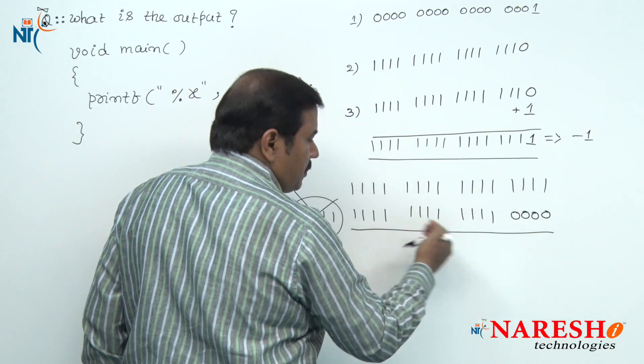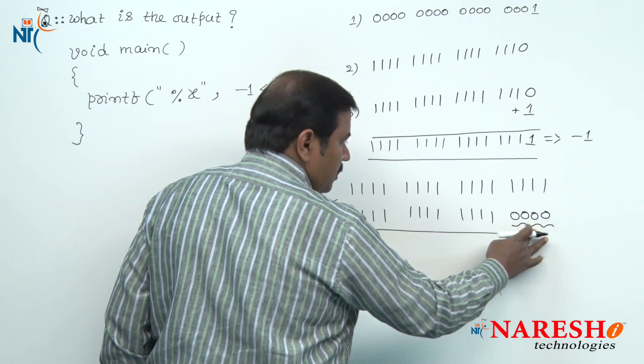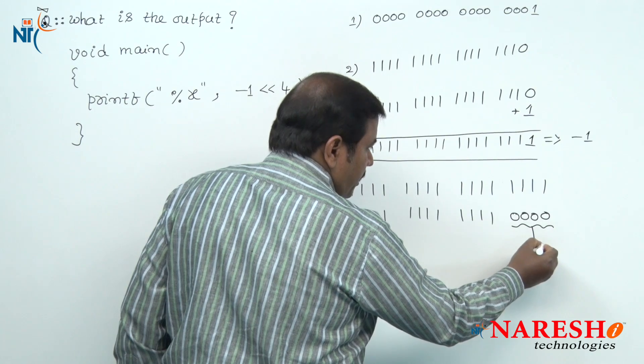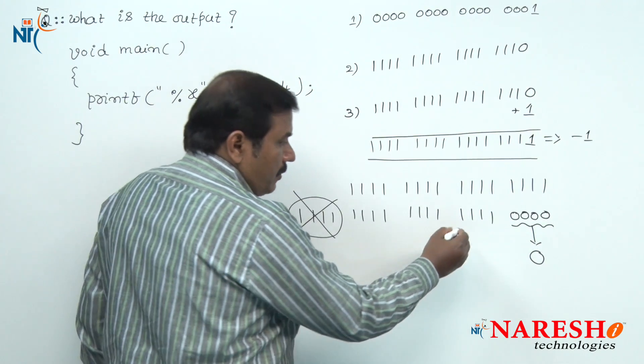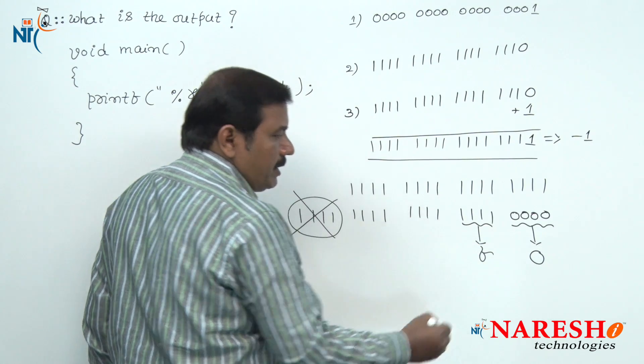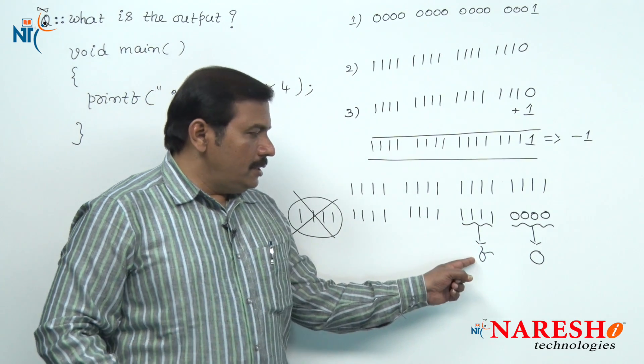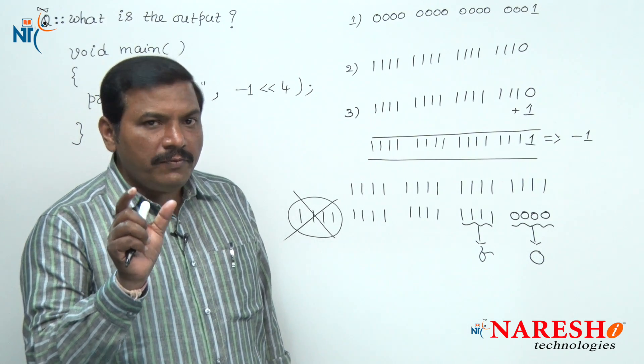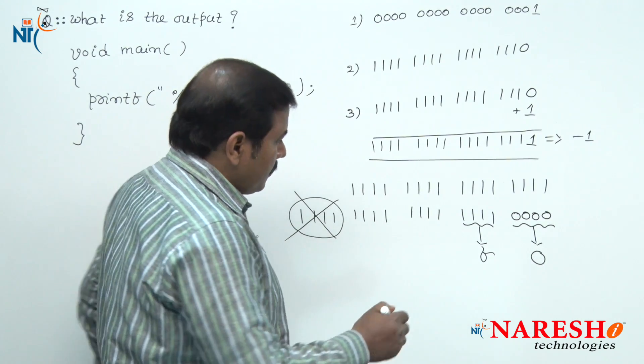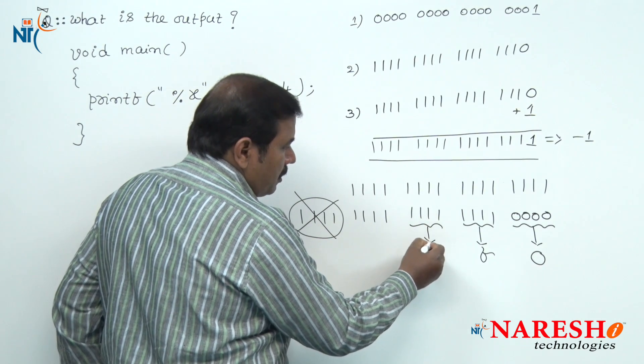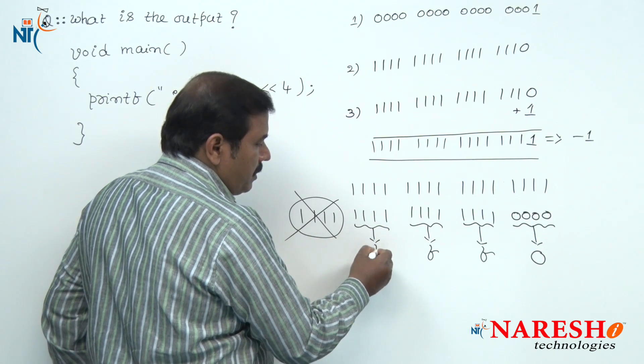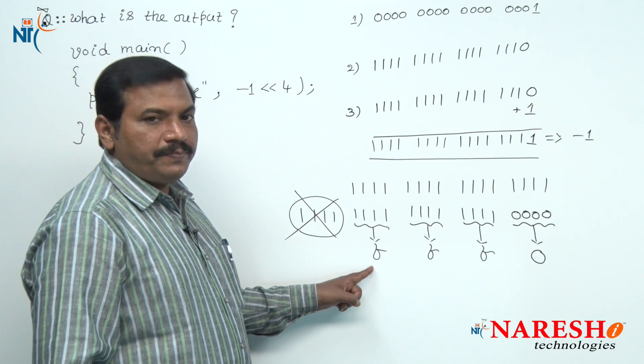While we are moving from right to left, this is the 4 bit binary code. For this 4 bit binary code, the equivalent hexadecimal value is 0. For the next 4 bit binary code, the equivalent hexadecimal value is F because the F equivalent decimal value is 15, and for 15 the binary value is 4 ones. For the next 4 bit binary code, the equivalent hexadecimal value is F, and for this also the hexadecimal value is F.